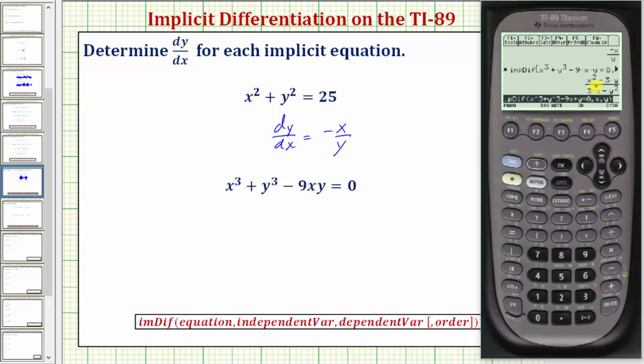dy/dx is equal to the quantity x squared minus three y divided by the quantity three x minus y squared.